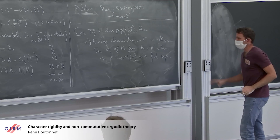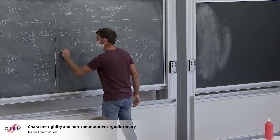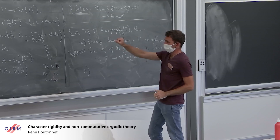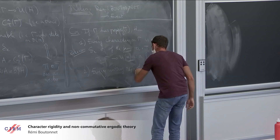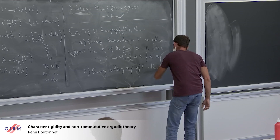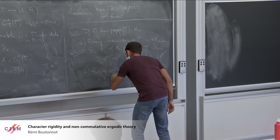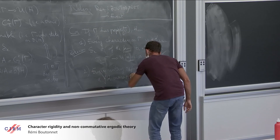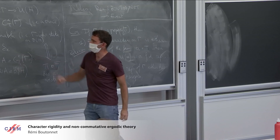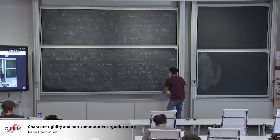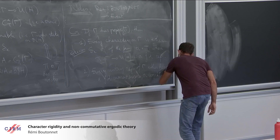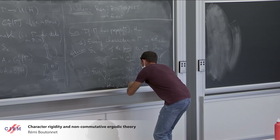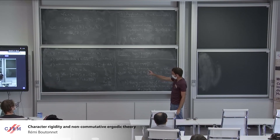This is a consequence of the second statement — a result by Peterson. The second consequence, from the first statement, is that every unitary representation of Γ either has a finite-dimensional invariant subspace, or you have this Dirac trace defined as a state on C*π(Γ), which means the representation weakly contains the regular representation. This is free containment. Tomorrow I will give just the key idea on how to prove the second statement.